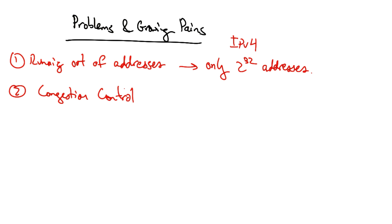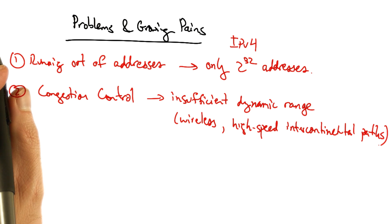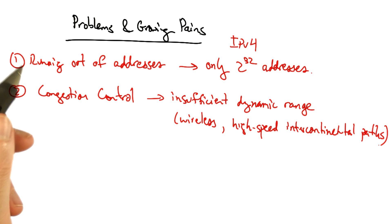Another problem is congestion control. Congestion control's goal is to match offered load to available capacity. But one of the problems with today's congestion control algorithms is that they have insufficient dynamic range. They don't work very well over slow and flaky wireless links, and they don't work very well over very high speed intercontinental paths. Some solutions exist, but change is hard, and all solutions that are deployed must interact well with one another. And deployment, in some sense, requires some amount of consensus.